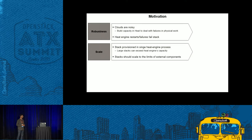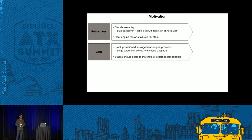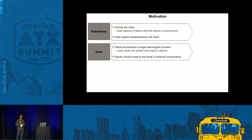Another issue was scalability. In the current heat engine, the stack is provisioned within a heat engine process — if you request a stack, the whole request is taken by one heat engine and it provisions that entirely. It may happen that all large stacks end up on a particular heat engine exceeding its capacity. We also wanted to ensure that heat scales up to the limit of external components like DB or messaging queue — it should not limit itself. If DB supports 1,000 transactions per second, heat should take that up; if 10,000, it should scale to that. It shouldn't restrict by itself.